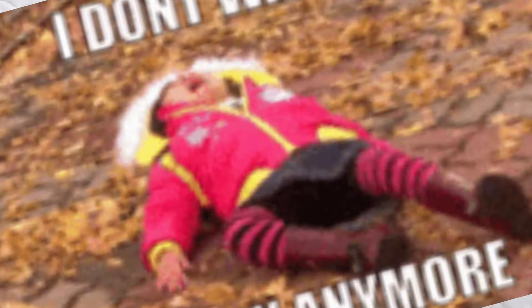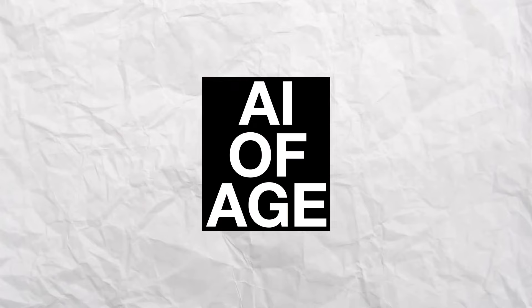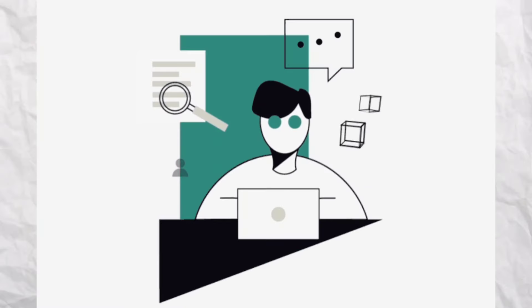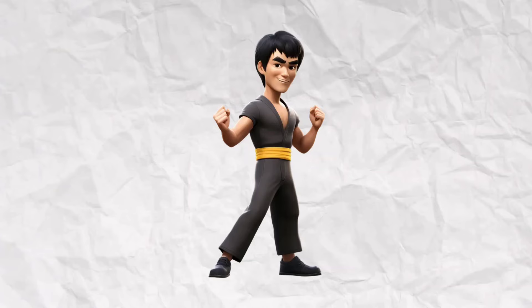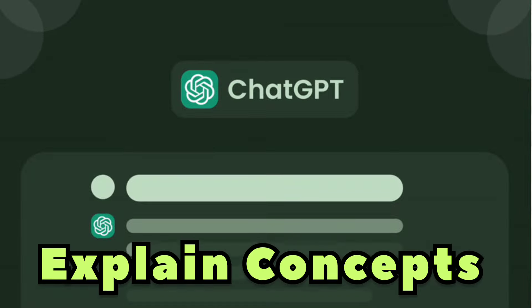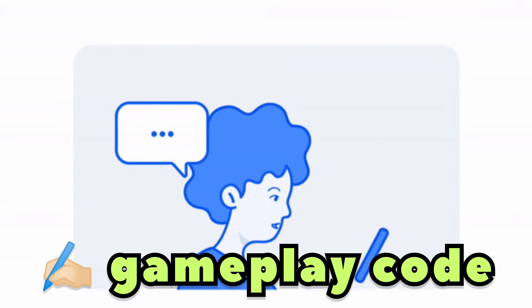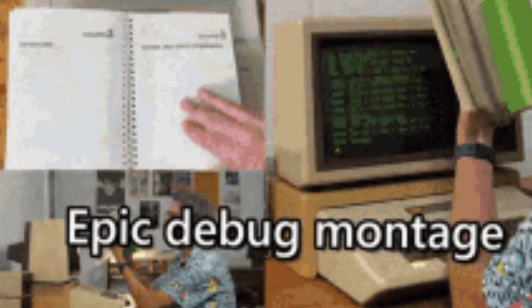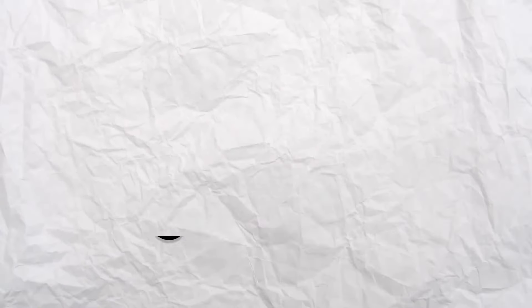Because I'm lazy. Number three: AI. We're living in the age of AI, and I'd be missing out if I didn't show you how to use AI to study. There are AI tools that can help you with coding, art, and even design ideas. I use AI tools like ChatGPT every day to explain concepts, write gameplay code, build level editors, debug code, and even challenge my understanding by asking it to explain things back to me.